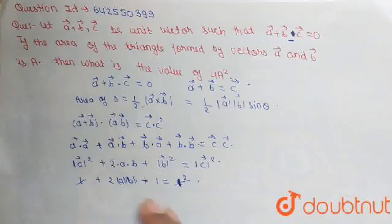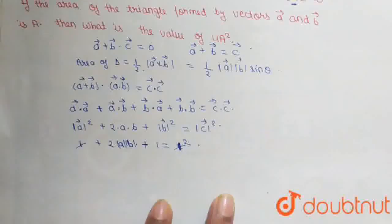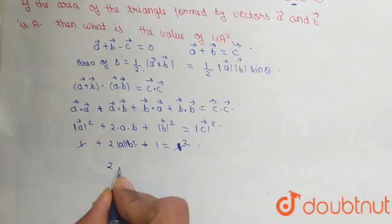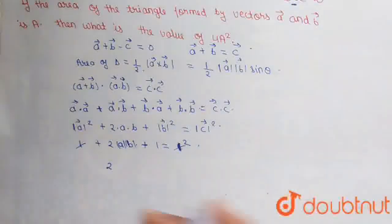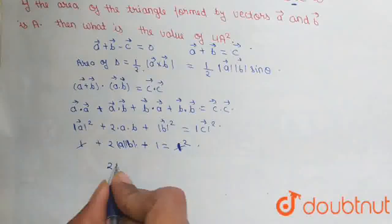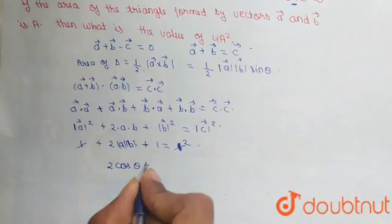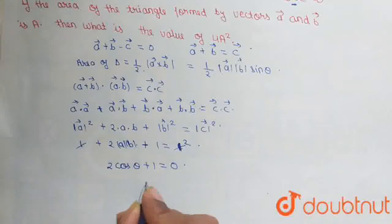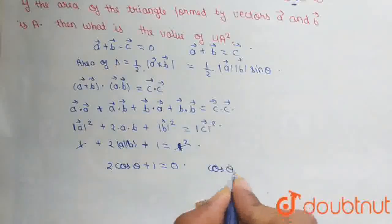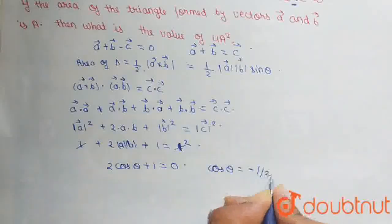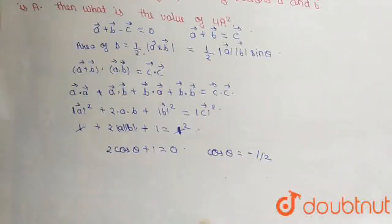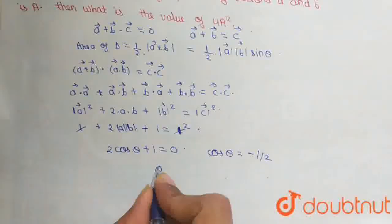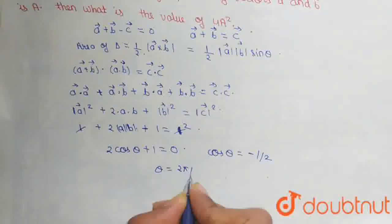From here, the 1s on both sides cancel. Since the modulus of A and B is 1, we get 2 cos theta plus 1 is equal to 0. From here, cos theta is equal to minus one half. As we know, cos theta equals minus one half at 2 pi by 3, so theta is equal to 2 pi by 3.